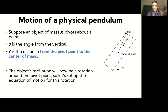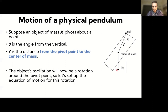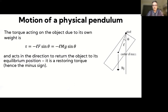We call theta the angle from the vertical, which represents the equilibrium position. Gravity acts on this object, typically at the center of mass. This is a rotation problem, so Newton's second law is described using the moment of inertia and the torque. Since gravity acts at the center of mass, which is different from the pivot point, gravity exerts a torque on the object.